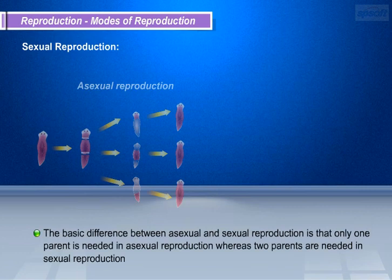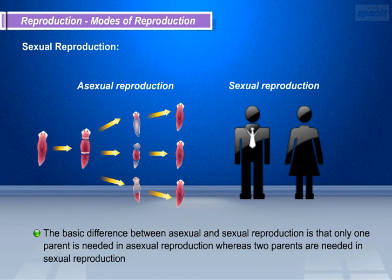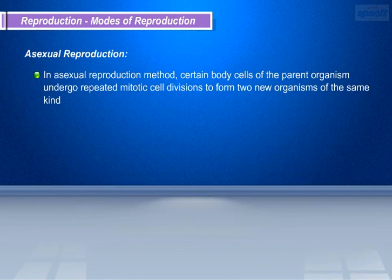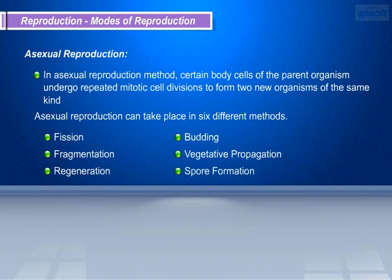The basic difference between asexual and sexual reproduction is that only one parent is needed in asexual reproduction, whereas two parents are needed in sexual reproduction. In asexual reproduction, certain body cells of the parent organism undergo repeated mitotic cell divisions to form two new organisms of the same kind. Asexual reproduction can take place in six different methods: fission, fragmentation, regeneration, budding, vegetative propagation, and spore formation.